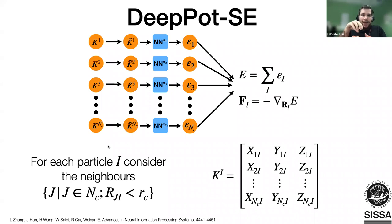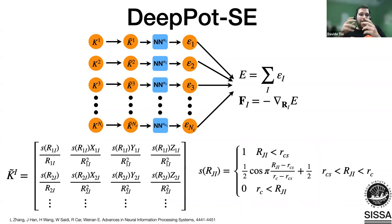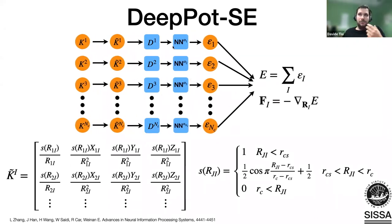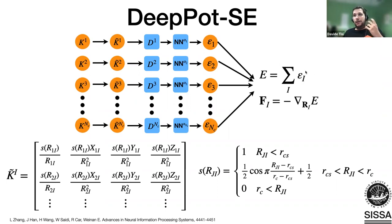In DeePMD, for each atom you look at all neighbors within some cutoff and construct a descriptor matrix. You build the tilde matrices by adding a smoothing function that kills the interaction smoothly to zero beyond the cutoff. This symmetry-preserving descriptor is fed to the neural network, which gives the local energy. From local energies you obtain the total energy, forces, and the derivatives of local energies—which we need for the energy current calculation.